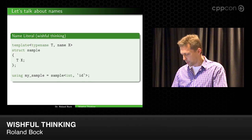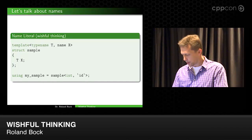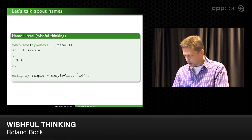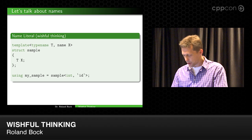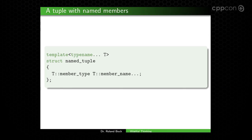Now, this example is pretty boring, but just imagine for a second what we could do with it, for instance, like this. If we could reason about names like we could do about tags and types, then we could have a named tuple, very simple.